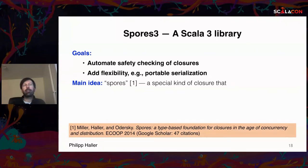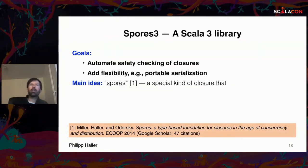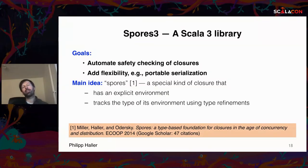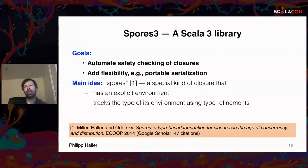The main idea behind this library is called spores — hence the name Spores 3. Spores is not a new idea; we introduced it in a research paper a few years ago with co-authors. A spore is a special kind of closure where the environment — the captured variables — is made explicit, and the type of the environment is tracked at compile time using type refinements. This lets us use that extra type information to express safety constraints.